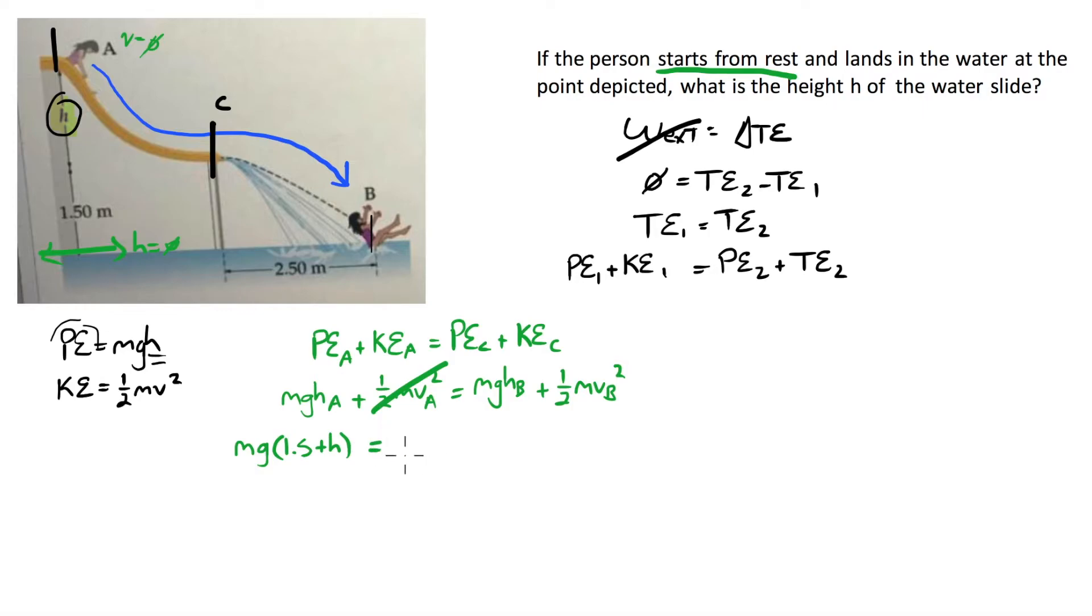Let me fill these guys in. We've got mgh of A plus my one half mv of A squared is going to be equal to my mgh at point C plus my one half mvc squared. What we can do is we can say, well, we started from rest. So the velocity up here, v is going to be equal to zero, which is going to make that whole term equal to zero.